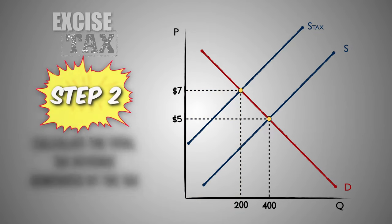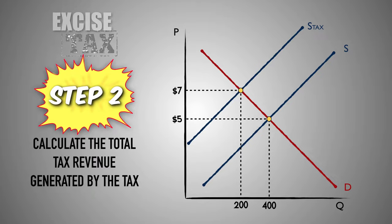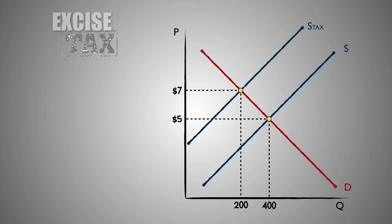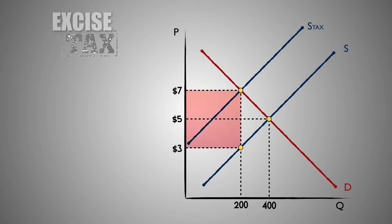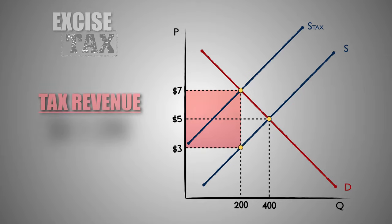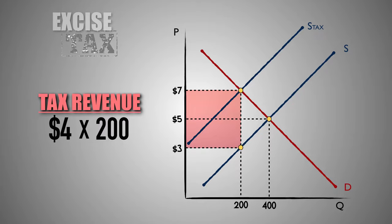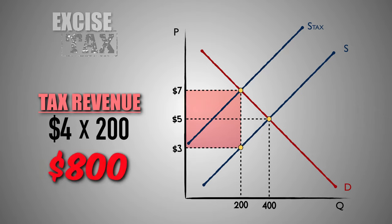Step 2: We can calculate the total tax revenue generated by the $4 per unit tax imposed on firms in the industry. When we shifted the supply curve to the left to show a decrease in the supply of Good C, we shifted it in the exact amount of the per unit tax. This means the space between the supply curves at every quantity equals $4 — the size of the tax levied on firms for every unit of Good C produced. Since firms pay $4 to the government for every unit produced after the tax, we multiply the per unit tax by the quantity produced to determine that $800 in total tax revenue will be generated by the excise tax in the market for Good C.